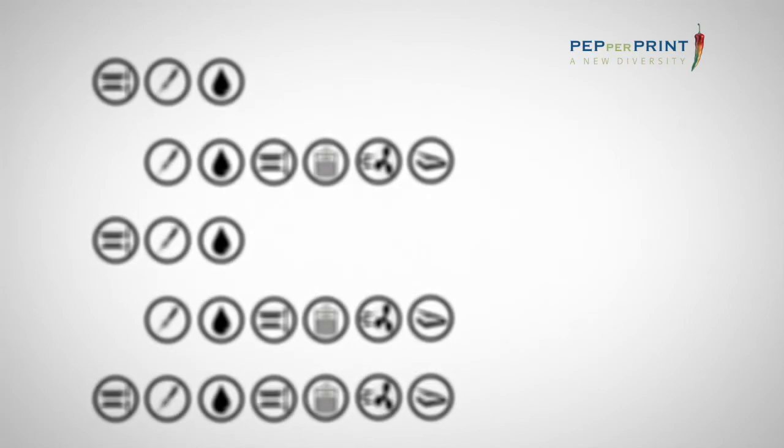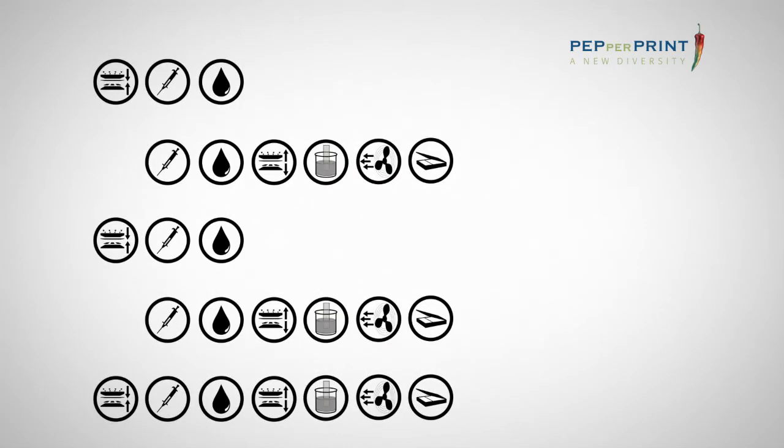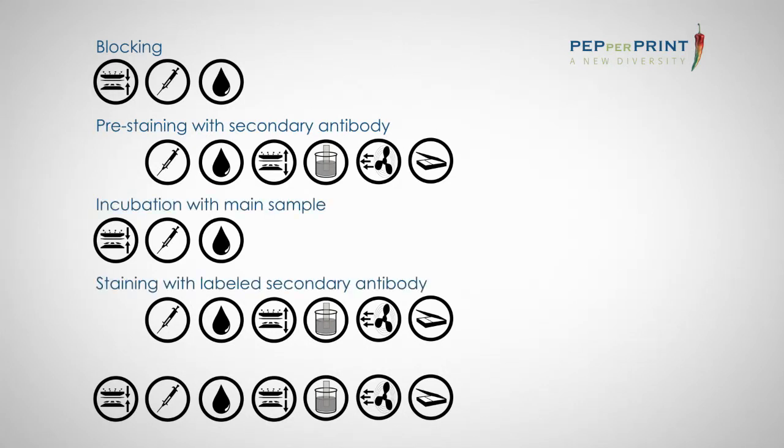Peptide MicroArray analysis involves various lab processes: blocking, pre-staining with the labelled secondary antibody, incubation with the main sample, staining with secondary antibody and optionally with control antibodies.